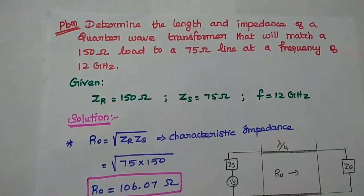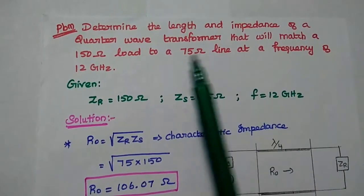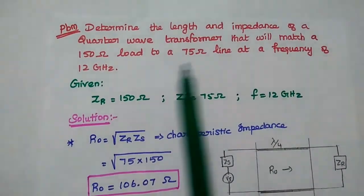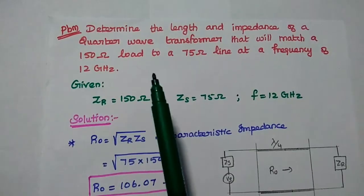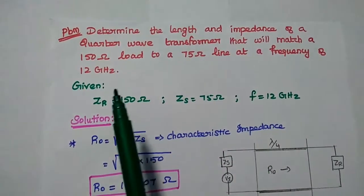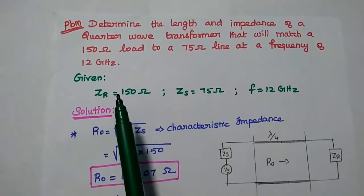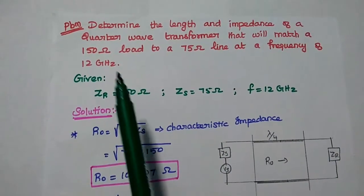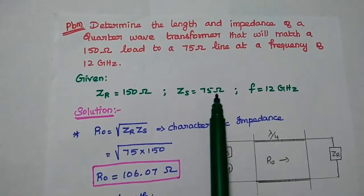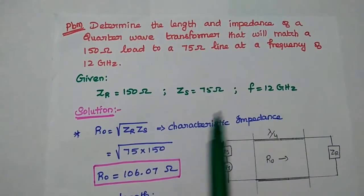The next problem: determine the length and impedance of a quarter wave transformer that will match a 150 ohm load to a 75 ohm line at a frequency of 12 gigahertz. First we have to write the given data. Load impedance is equal to 150 ohm. Source impedance is equal to 75 ohm. Frequency is equal to 12 gigahertz.